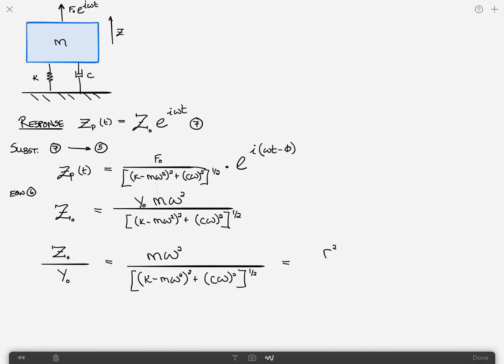And then this can be rewritten in non-dimensional terms as r squared divided by square root of one minus r squared plus two zeta r quantity squared.